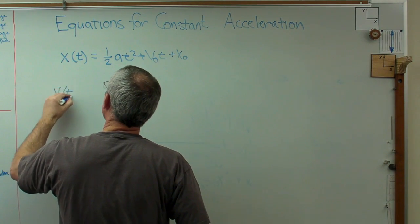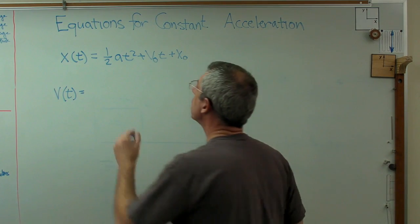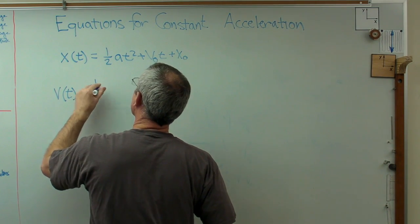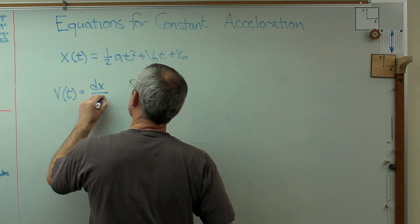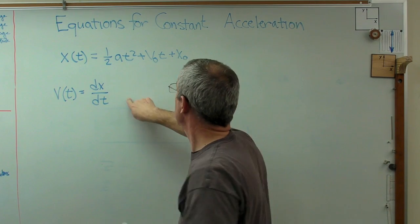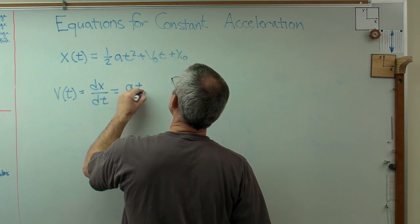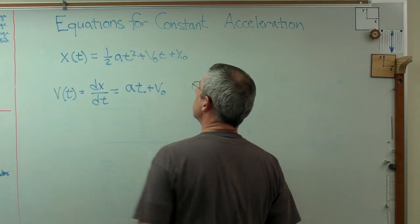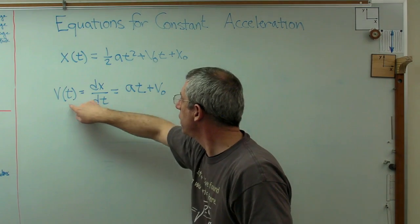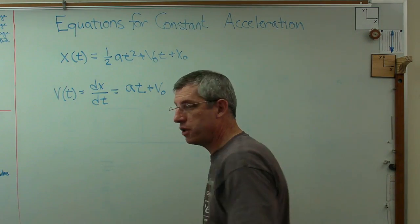Well velocity as a function of time is the rate of change of acceleration. Well that's a derivative, derivative with respect to time. So the derivative of that, the slope of that is equal to the velocity. Well let's see, that's going to be at plus v zero. That means the velocity at any point in time is the acceleration times time plus the initial velocity.